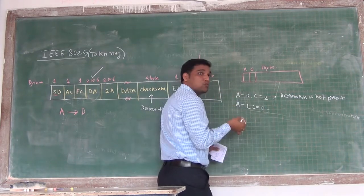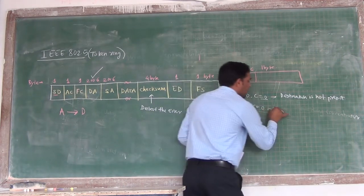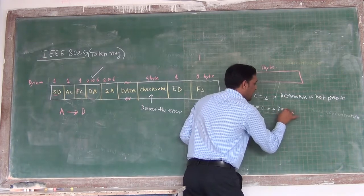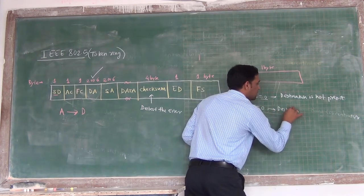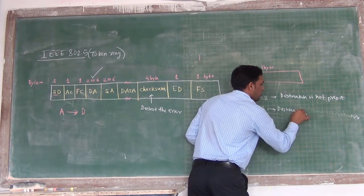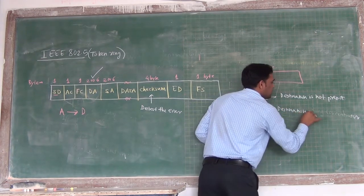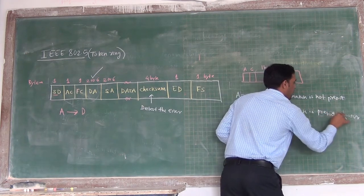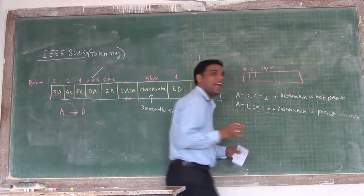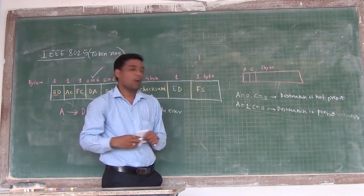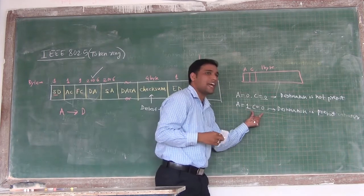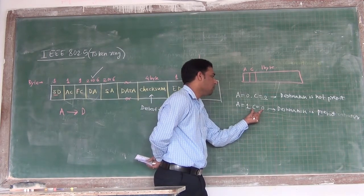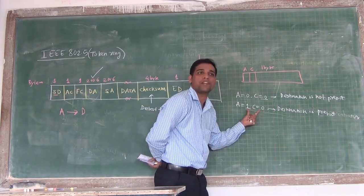In another case, if the destination is present but there is an error in the frame — meaning A is 1 and C is 0 — there is an error, so the station may not accept the frame.